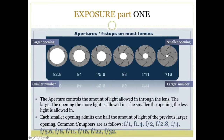The common f-numbers or common f-stops are as follows — there are more than are listed here and you can also find these f-numbers listed in Canvas in module week 2. We have f1, f1.4, f2, f2.8, f4, f5.6, f8, f11, f16, f22, and f32.